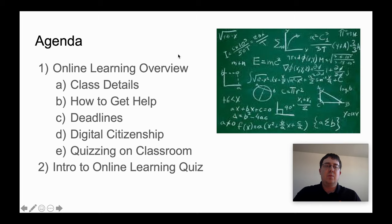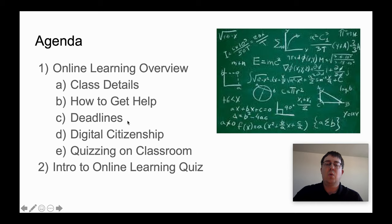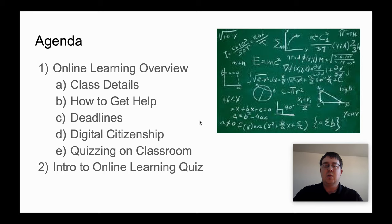So here's the agenda: we're going to do an online learning overview. First, we're going to have some class details, just going over what you're going to see. Second, how to get help — how can you get help from me virtually. Then deadlines: what you're going to need to do to turn things in on time, to make sure you're getting your credit and attendance. Then digital citizenship, just to make sure we know we are still in a classroom environment, even if it is an online one.